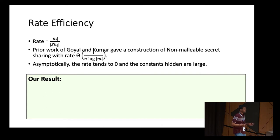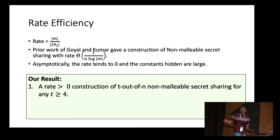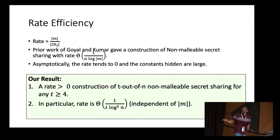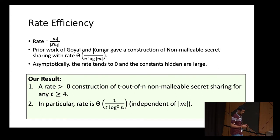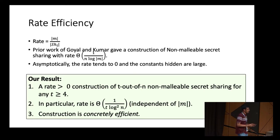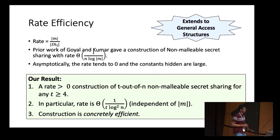In this work, we improve the state of affairs by first giving a positive-rate construction of T-out-of-N non-malleable secret sharing for any threshold T greater than or equal to 4. The rate is 1 over T log-squared N, where T is the threshold and N is the number of parties — this rate is independent of the size of the secret. Another advantage is that the constants hidden are very small, making it concretely efficient. Our construction also easily extends to more general monotone access structures beyond threshold constructions.